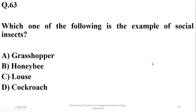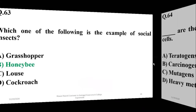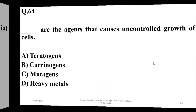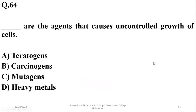Question 63: An example of social insects is honey bees — B. Question 64: Agents that cause uncontrolled growth of cells are carcinogens, because they cause an uncontrolled cell cycle.